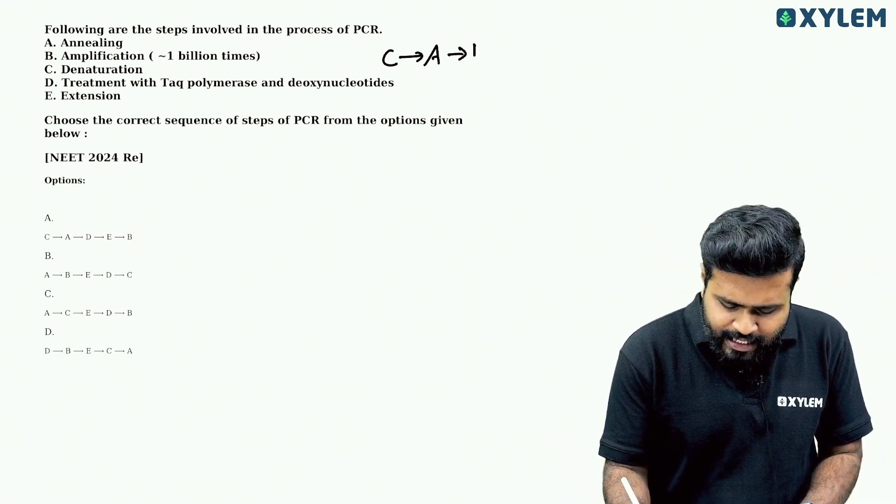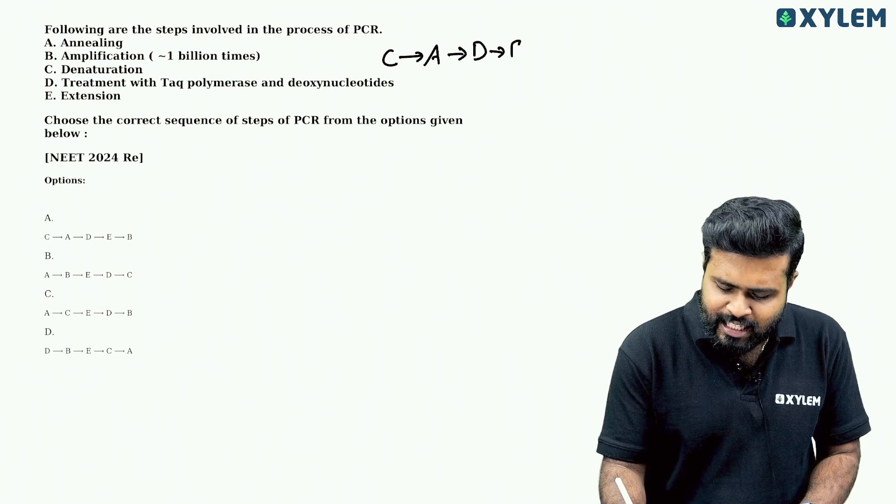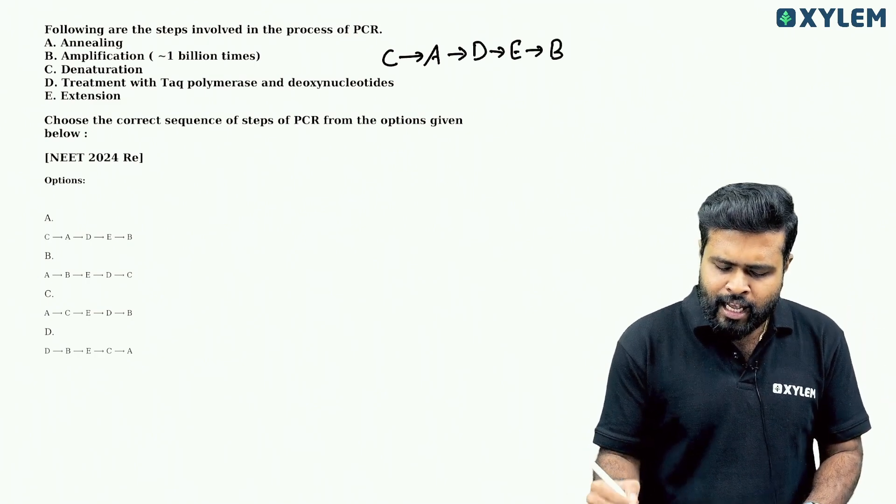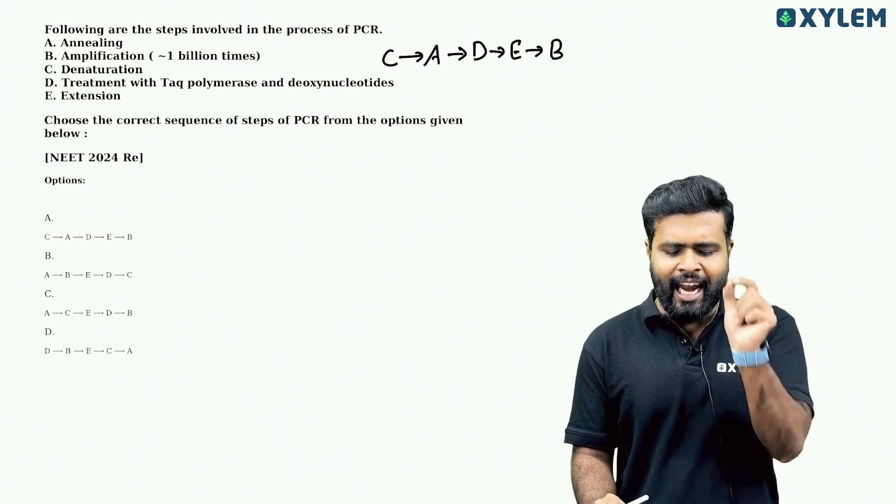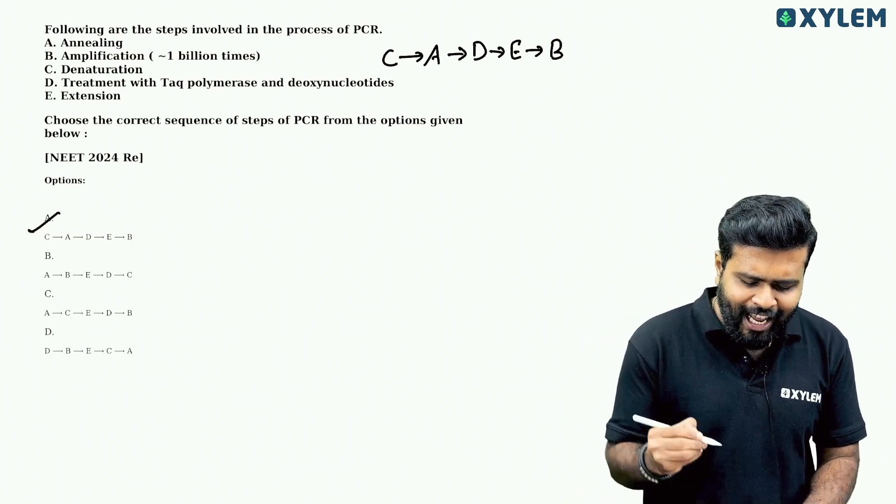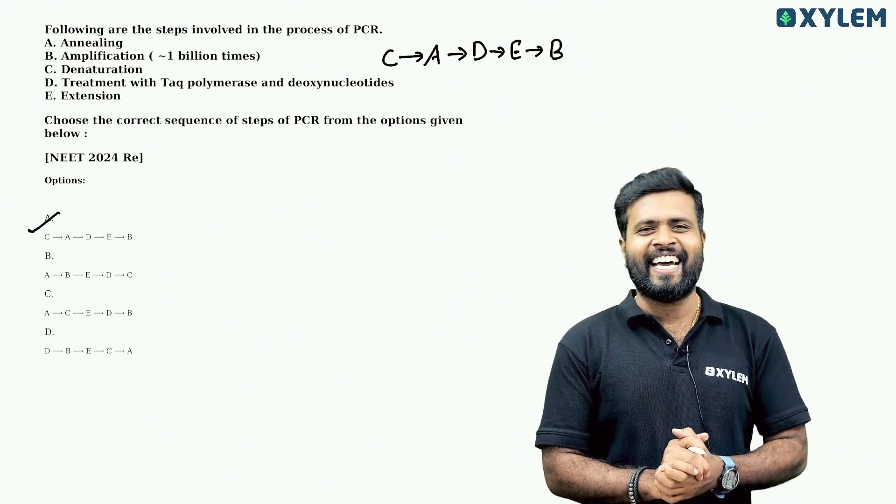We could use the next step. So then it is D, that is the extension, that is the amplification. The correct order is C, A, D, E, B. This is option A, so option A is the right answer.